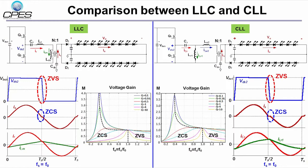There are three major differences between LLC and CLL. First of all, the voltage gain of LLC is equal to 1 when it is working at the resonant frequency point. However, the voltage gain of CLL is greater than 1 at that point.